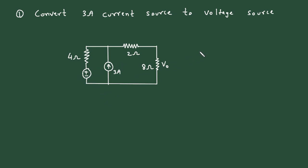Now according to Ohm's law, here we can write V is equal to I into R. The value of current is 3 ampere and the value of resistance is 4 ohm. So it will be 12 volt. So this will be of 12 volt. Now we can erase this current source from here.